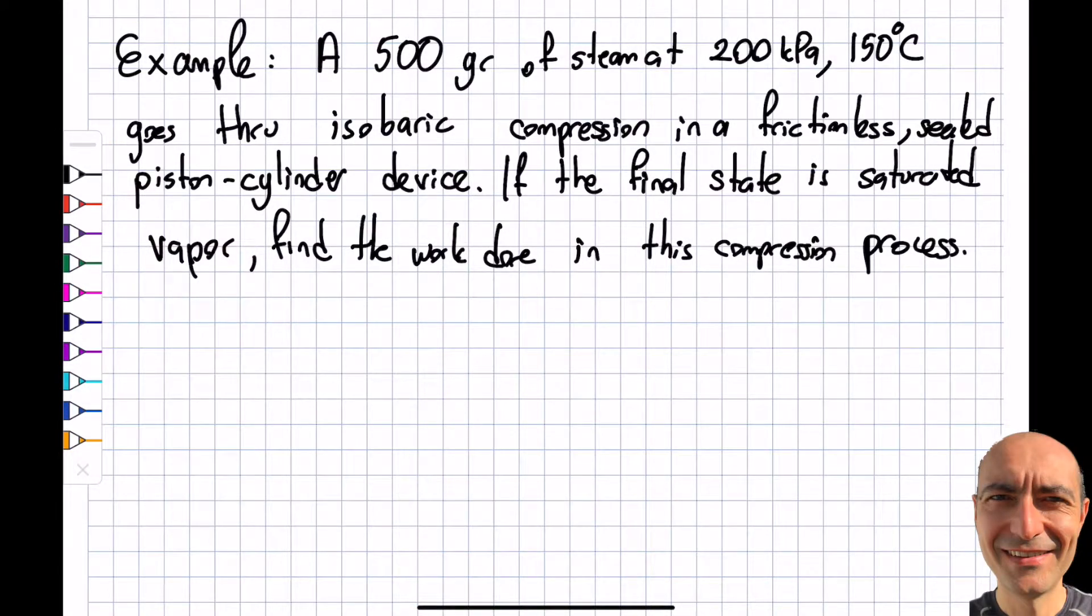Okay, welcome to another example. This time the example is quite similar to the previous example I made up. I still have half a kilogram of steam, and I give you the temperature and pressure at a fairly elevated temperature. It goes through an isobaric process again.